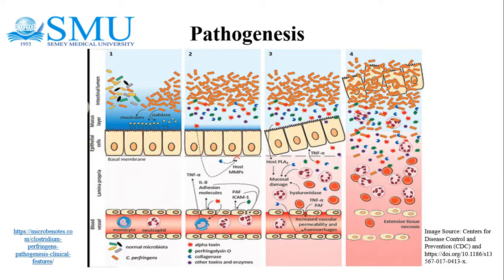The toxin involved in gas gangrene is alpha toxin, which inserts into the plasma membrane of cells, producing gaps that disrupt normal cellular function. Clostridium perfringens enterotoxin is a polypeptide of 35–5 kDa that accumulates at the beginning of sporulation and is excreted to the medium when cells lyse at the end of sporulation.